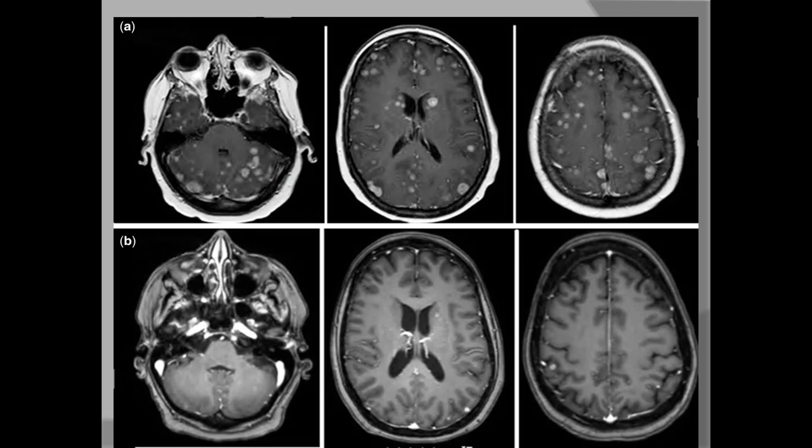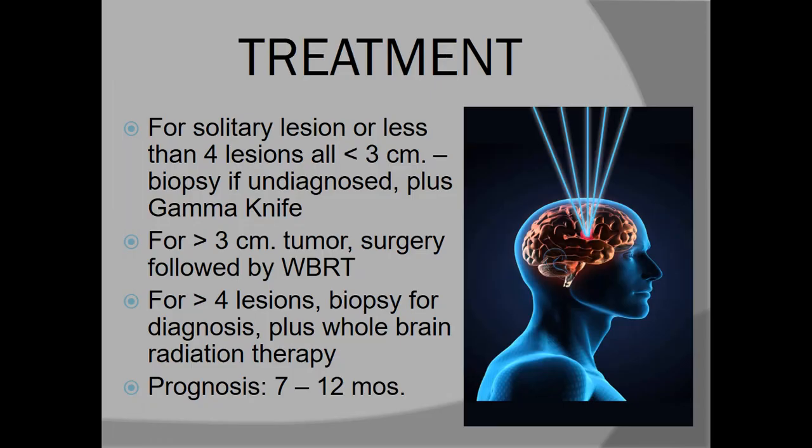For the treatment of brain metastases: for solitary or fewer than four lesions less than 3 cm, we go for biopsy if undiagnosed, and can also use gamma knife. For tumors larger than 3 cm, we go for surgery followed by whole brain radiotherapy. For more than four lesions, we take a biopsy from one lesion and then give whole brain radiotherapy. The prognosis in these patients is very poor and they usually do not survive more than 7 to 12 months.